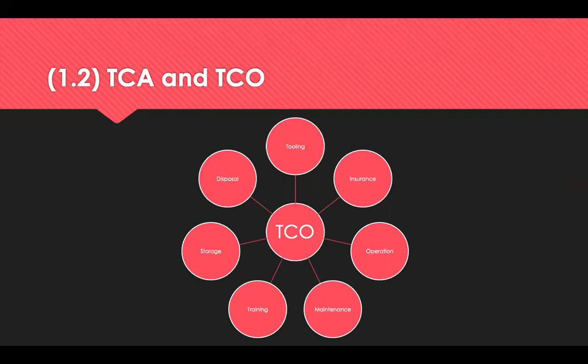The total cost of ownership, also known as the life cycle cost, is used to analyse the total cost incurred over the lifetime of the goods or services you're buying. It's often used when procuring assets — going back to CAPEX requirements. It looks at things like tooling and insurance, operating costs, maintenance, cost of training, storage and disposal of that asset. Calculating your total cost of ownership and total cost of acquisition will help to show which option presents the best overall value for money for your organisation.